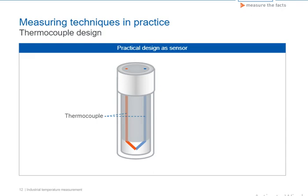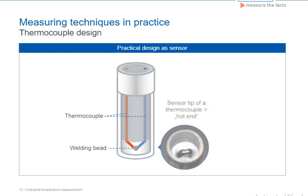An epoxy resin protects the exposed ceramic area from moisture and loss of insulation resistance. In the sensor area, the hot end, the ceramics are partly removed and the corresponding thermo-wires joined and welded. As you can see in the sectional drawing, the hot end with the welding bead is then filled with ceramic powder and protected by a tightly welded cap against media contact. On the right of the picture is the measuring tip of a typical thermocouple with 6 mm external diameter. Clearly visible is the welded junction of the thermo-legs.